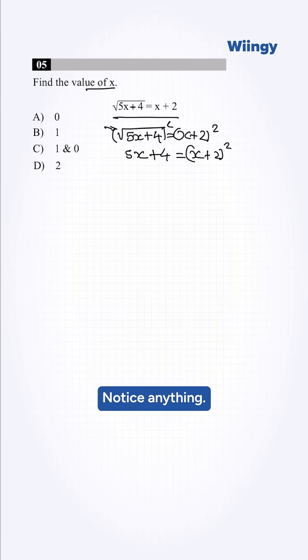Notice anything? This is algebraic identity, so we can write this as x squared plus 4x plus 4, and LHS will be 5x plus 4.